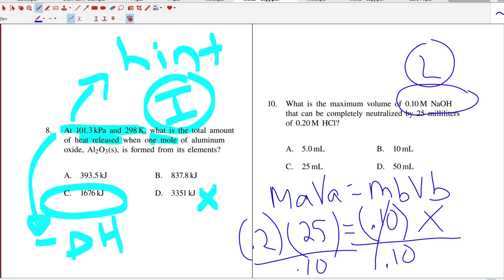Actually, I didn't get it right. It's 0.2 times 25 divided by 0.10, and I'm getting 50. 50 mLs is the answer. And that's it on moles.